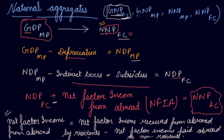Similarly, you can find out GNP at MP. GDP at MP is given to you — G and G are the same, market price and market price are the same, so there is no change. You only have to convert domestic product into national product, so you simply add net factor income from abroad and you get GNP at MP. In a similar way, you can find out NNP at MP and NNP at FC.